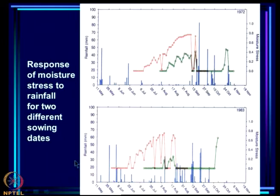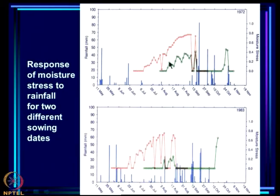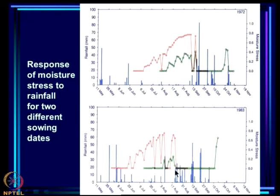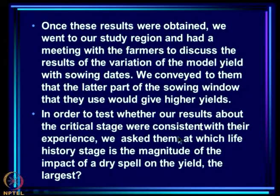This further illustrates that when you sow makes a difference to the moisture stress the plant experiences. For 1972, late sowing resulted in little moisture stress, while early sowing caused huge moisture stress at pod filling. In 1983, early sowing would have led to severe stress, whereas optimum sowing leads to no stress at the critical pod filling stage.